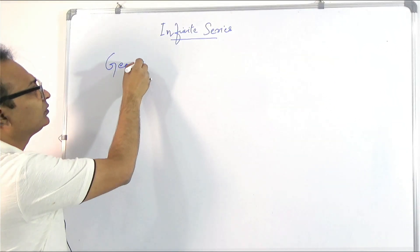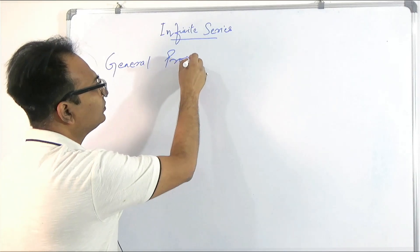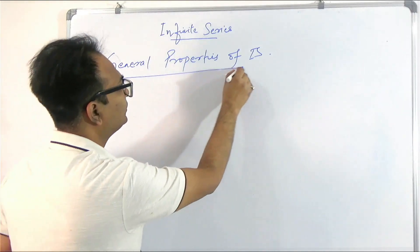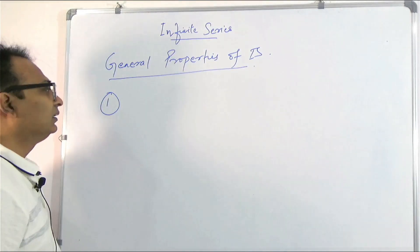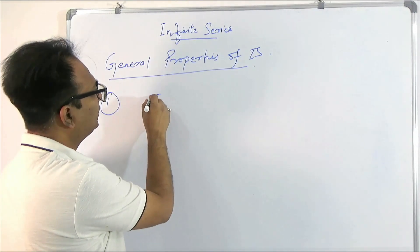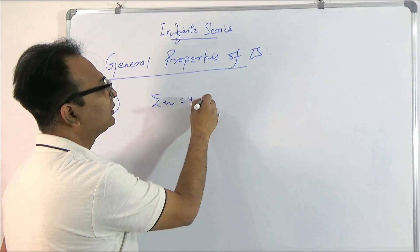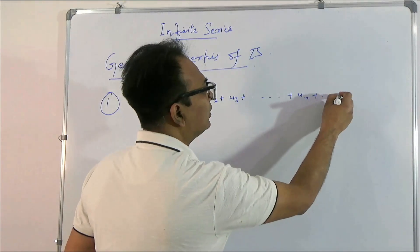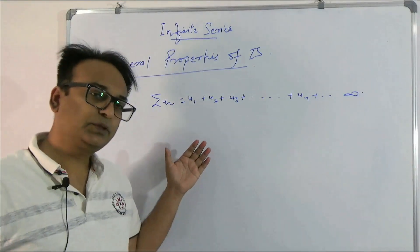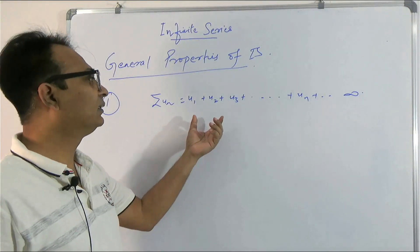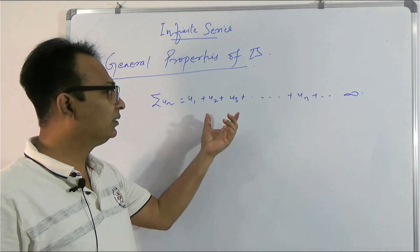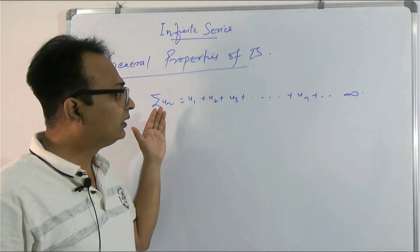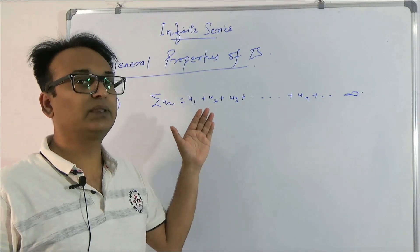What are the general properties of the infinite series? The first property states that if in an infinite series there be an addition or removal of a certain finite number of terms, the convergence, divergence, or oscillatory nature of the series does not change.